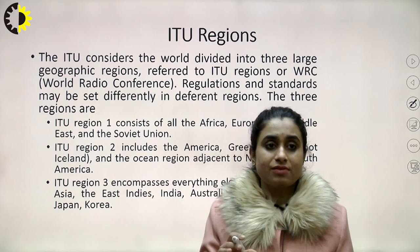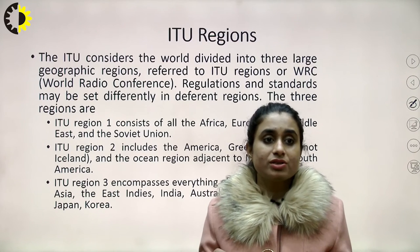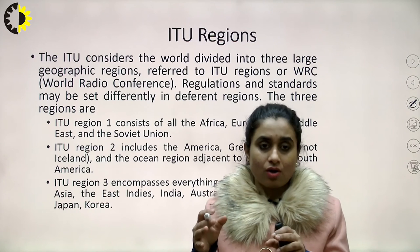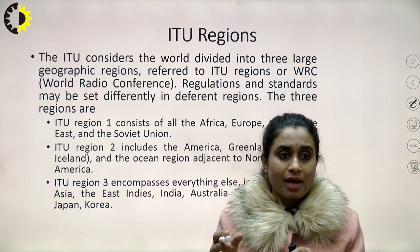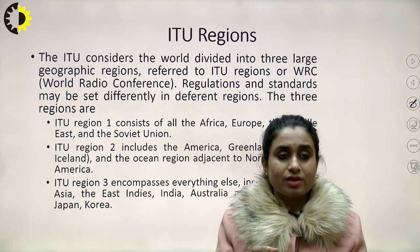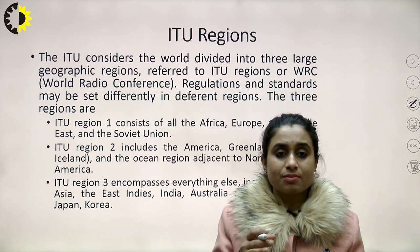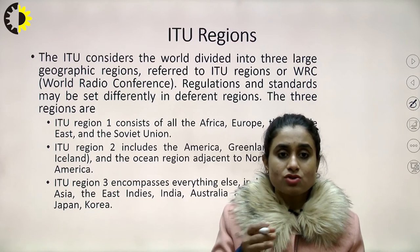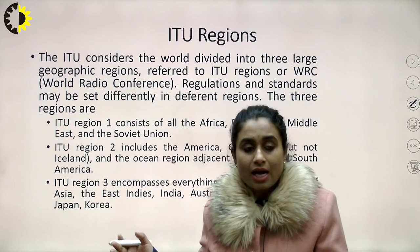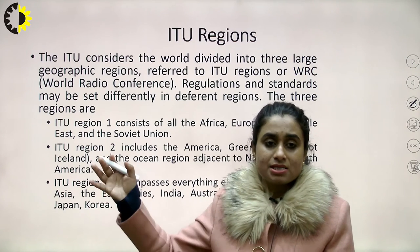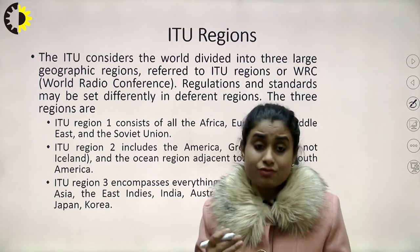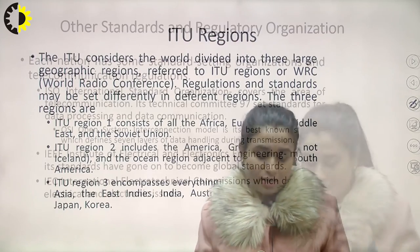ITU has divided the world into three regions. ITU Region 1 consists of all of Africa, Europe, the Middle East, and the Soviet Union. ITU Region 2 includes America, Greenland, and the ocean region adjacent to North and South America. ITU Region 3 encompasses everything else not covered by Regions 1 and 2.